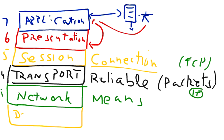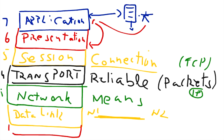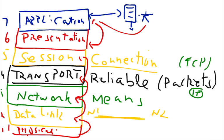Under the network layer we have the data link layer, and as the name suggests, the main purpose of the data link layer is to provide a reliable link between two nodes in the network. At the bottom we have the physical layer, which deals in bits — it deals with the electrical and physical specifications of the data connection. So: physical layer at the bottom, then data link layer, network layer, transport layer, session layer, presentation layer, and at the top the application layer.